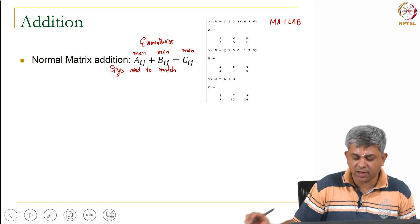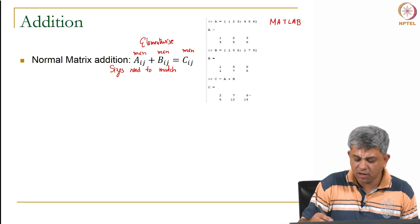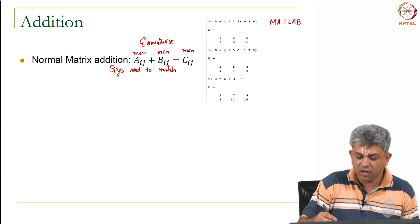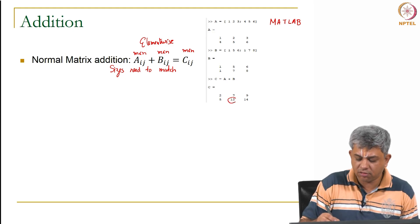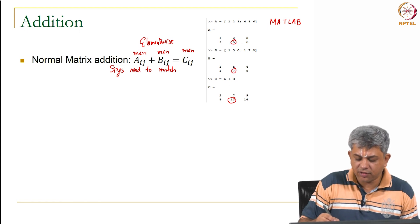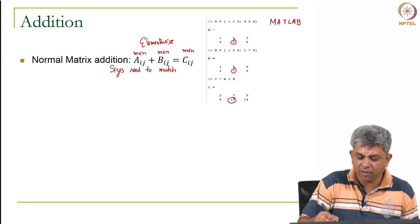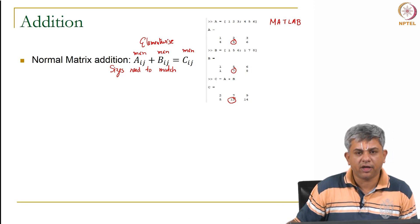So you take some simple matrix A, in this case 1, 2, 3, 4, 5, 6, add another matrix B and it gives you the output C. You can see any element, if you see the element in C which is 12, this is simply the corresponding element in A added to the corresponding element in B.